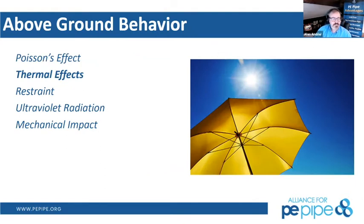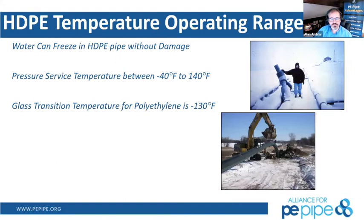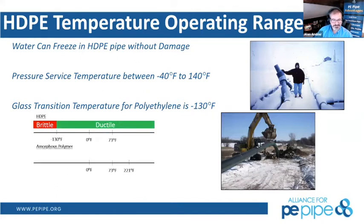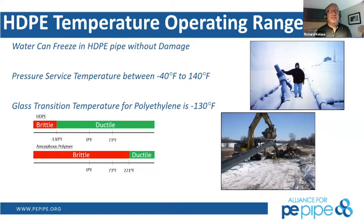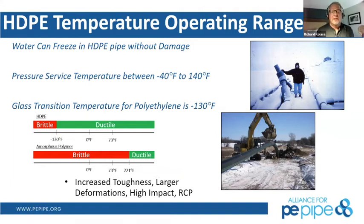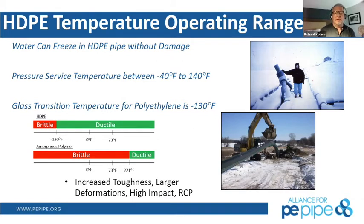Now we talk about thermal effects. Polyethylene is very ductile in nature — its ductility doesn't transition to brittle until minus 130 degrees Fahrenheit, which is quite substantial. The pipe can still be bent at minus 20 degrees Celsius, though it requires more force because it's more contracted. It remains ductile all the way up to 140 degrees Fahrenheit as its operating range. Amorphous polymers, by contrast, are brittle all the way up to 121 degrees. As the pipe gets warmer it acts like cooked spaghetti; as it gets colder it gets stiffer. Fusion conditions also change with temperature, so you need to ensure proper fusibility to create that monolithic system above ground.